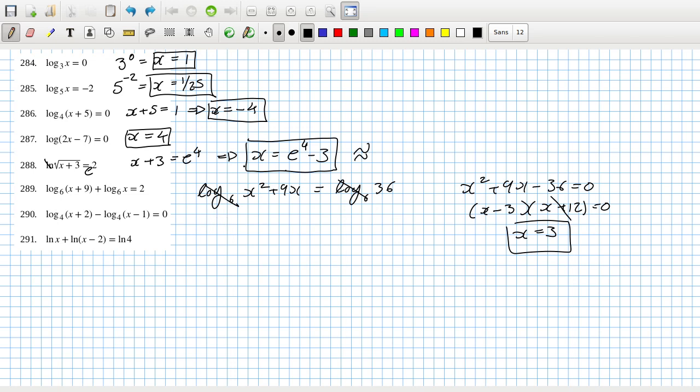Because I could say this is log base 4 of x plus 2 over x minus 1 equals 0, so that means x plus 2 over x minus 1 equals 1. Yeah I think no answer.